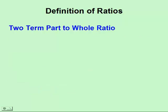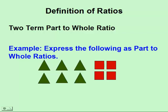A two-term part-to-whole ratio, meaning we have part and then the whole quantity. We'll do an example here to show you this. We'll use the same example we had of six triangles and four squares to show you what a part-to-whole ratio is.